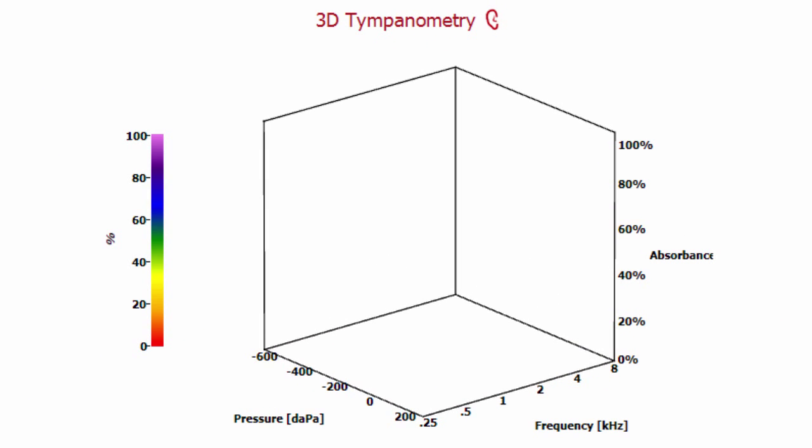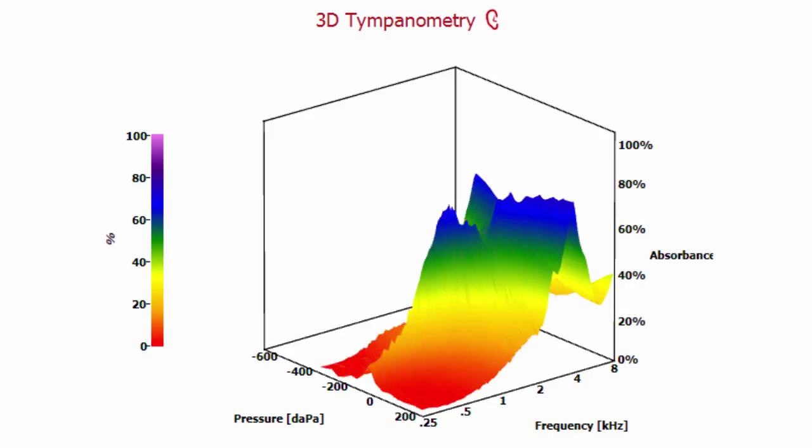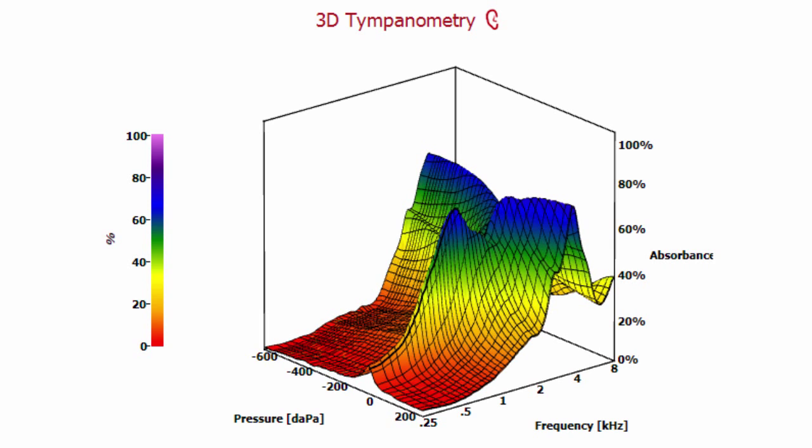The pump now builds up pressure. Data begins to appear on screen as soon as the positive starting pressure is reached. The pump moves the pressure back to ambient pressure and continues to the negative stop pressure. By now, you can see a mountain of data on the screen, consisting of tympanograms for many frequencies.